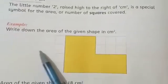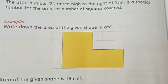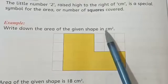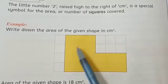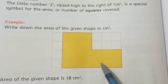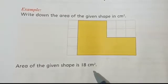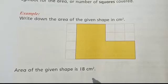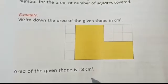Example. You have to write down the area of the given shape in cm². So now you have to measure it in cm². And the area of the given shape is 18 cm². When you measure it with your scale, what area will come? 18 cm².